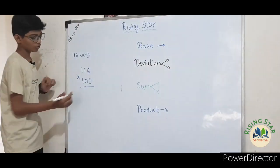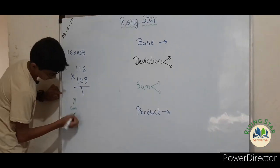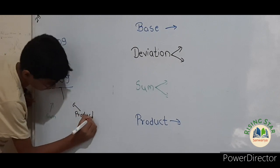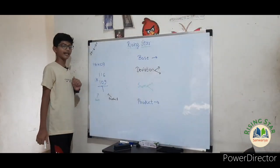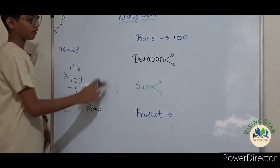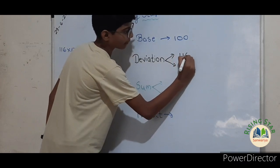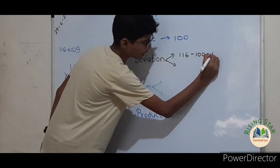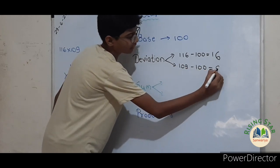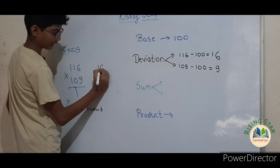Let's begin with the next example: one hundred and sixteen into one hundred and nine. First of all, draw a line — here will be the sum and here will be the product. Now let's find the base. One hundred and sixteen and one hundred and nine are near to hundred, so hundred will become the base. Deviation: subtract the base from each number. One hundred and sixteen minus hundred equals sixteen, and one hundred and nine minus hundred equals nine. So write sixteen and nine as the deviations.